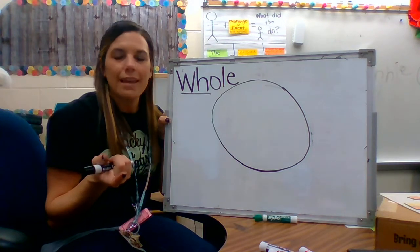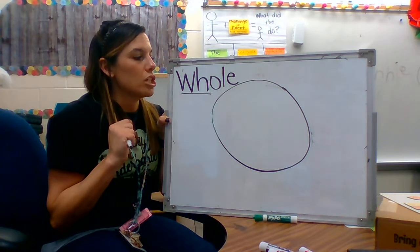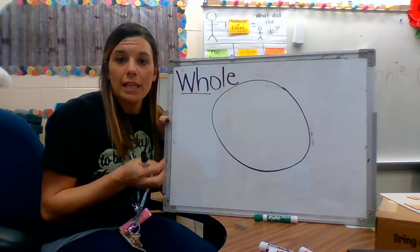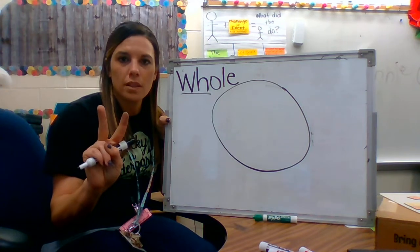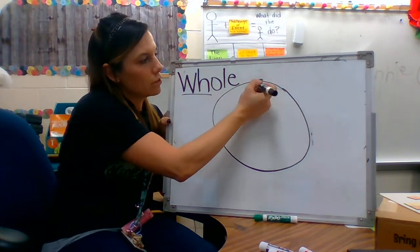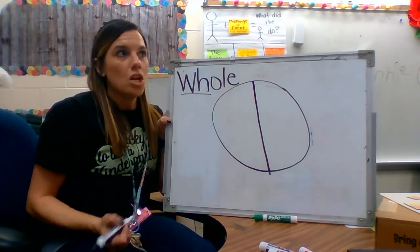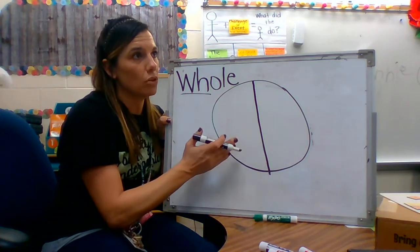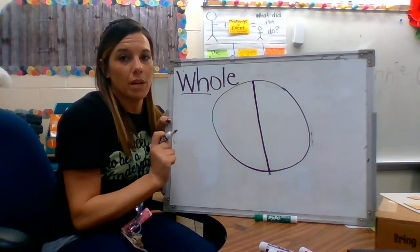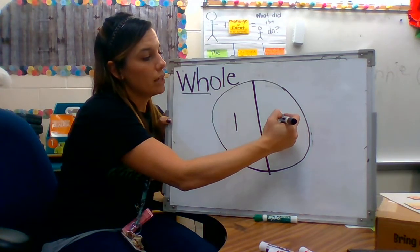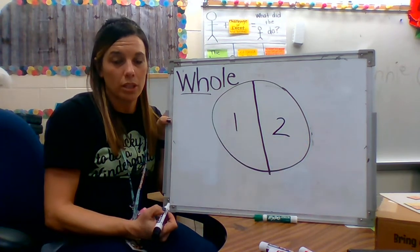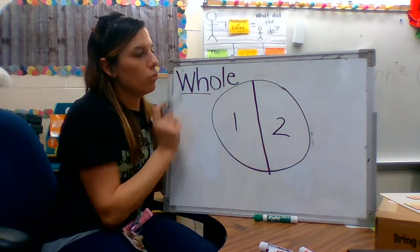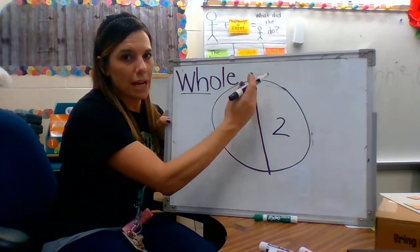Now let's pretend that I have my best friend over and she wants some of this cookie. Remember, being a good friend means to share equally. So I'm going to split my cookie into two equal parts — I need to draw a line right down the middle. So I had a whole cookie, but now how many parts did I make? There are two parts of my cookie. So if the whole cookie is called a whole, what do you think one part of this cookie is? I split it in half — half.